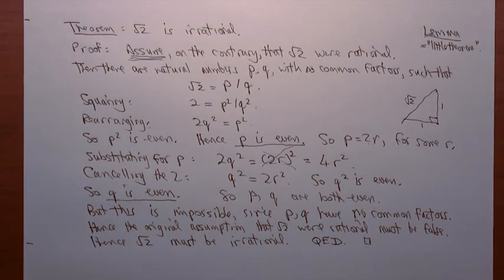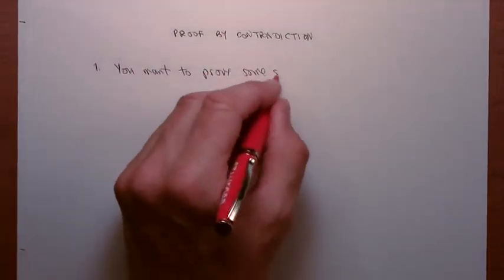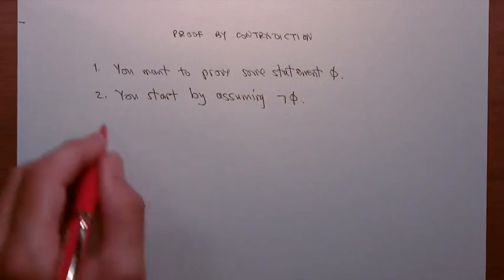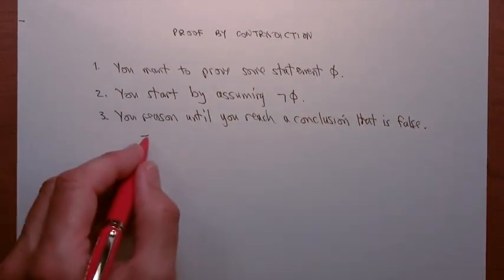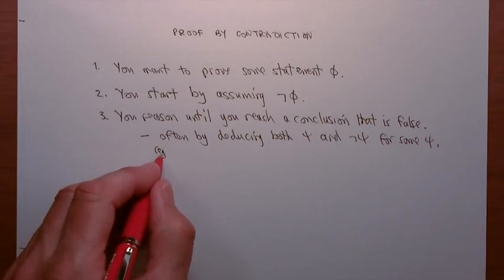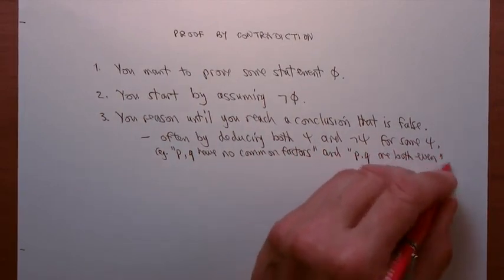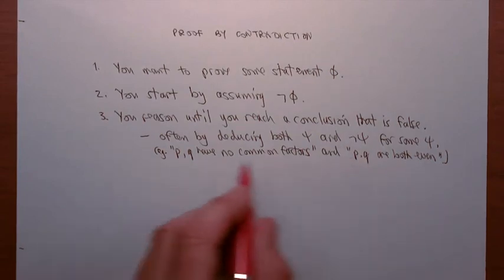Now you know why root 2 is irrational. This is an example of what mathematicians call proof by contradiction. Proof by contradiction works as follows: you want to prove some statement φ. You start by assuming ¬φ. You reason until you reach a conclusion that's false — often by deducing both ψ and ¬ψ for some statement ψ. In the proof that √2 is irrational, we proved that p and q have no common factors, and yet we knew that p and q were both even — two contradictory things.